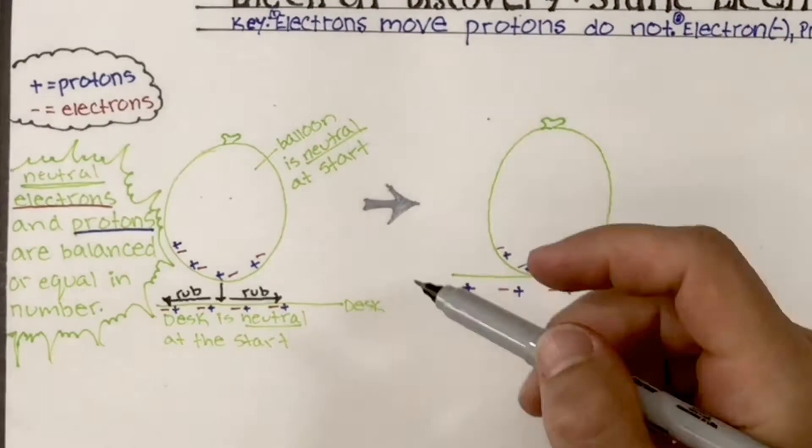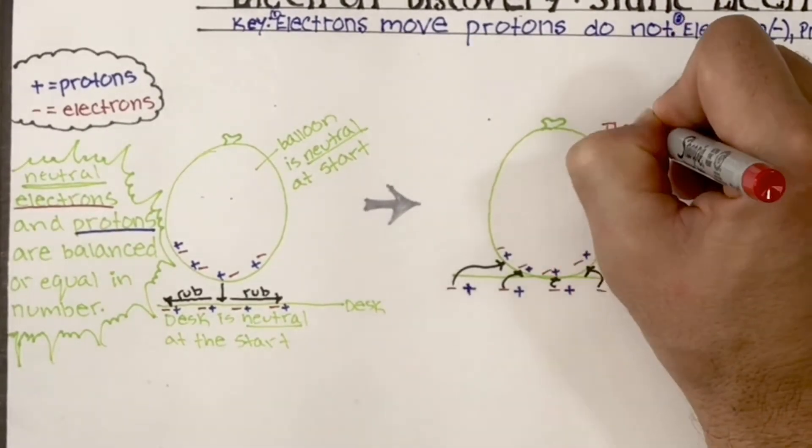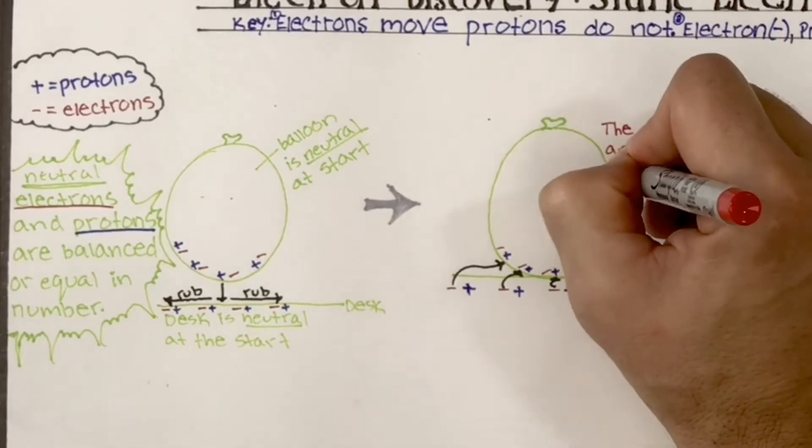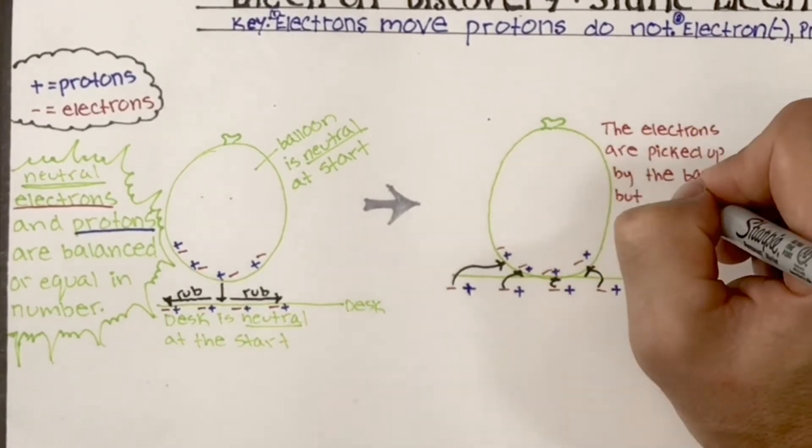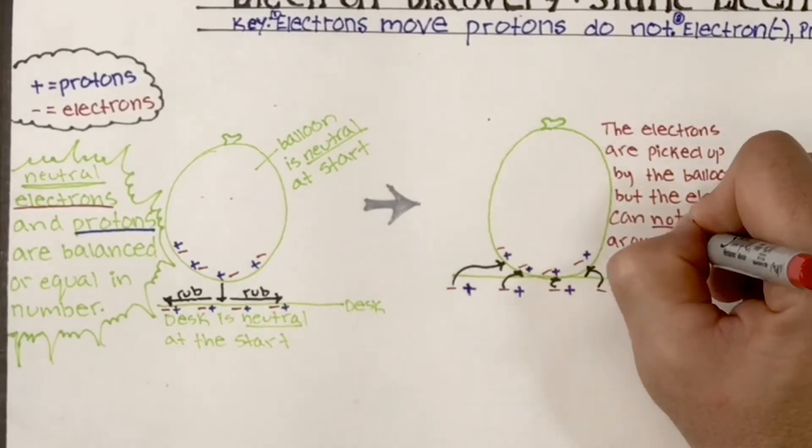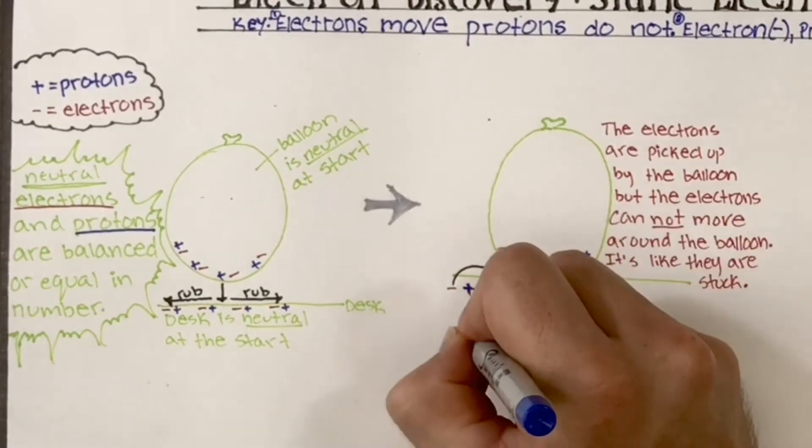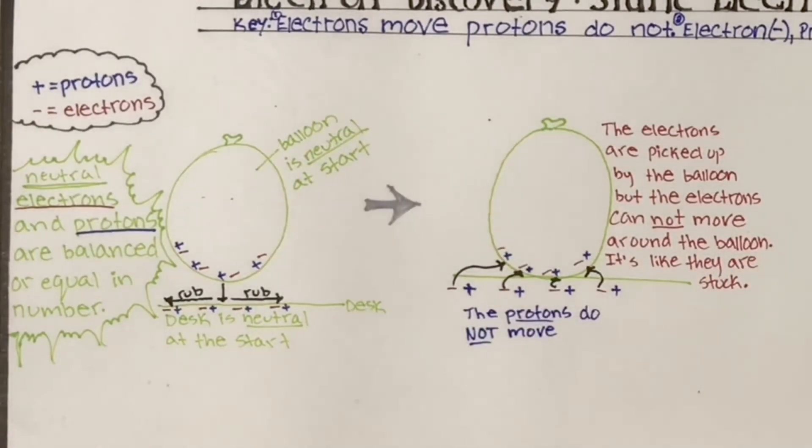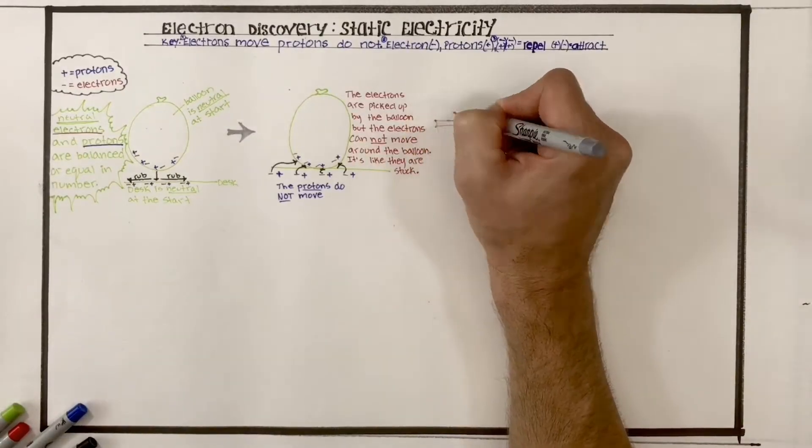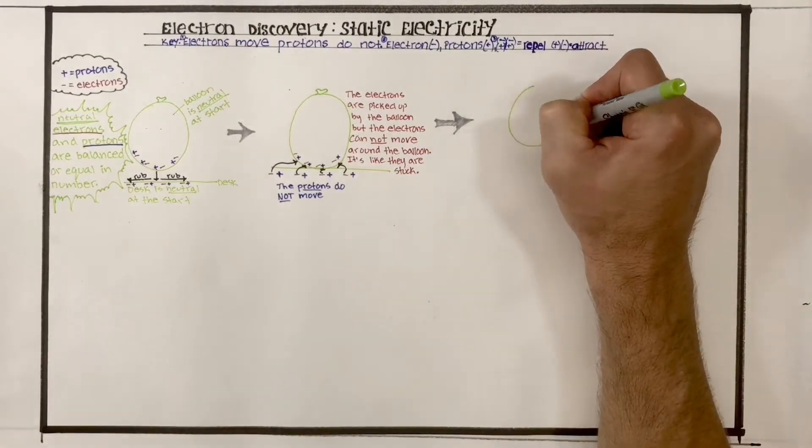So we have our positive protons, negative electrons in both the balloon and the desk. The electrons went from the desk into the balloon. So the electrons are picked up by the balloon, but the electrons cannot move around in the balloon. They're stuck right there in that spot. And we saw that when we tried to rotate the balloon. But protons do not move. They're stationary.